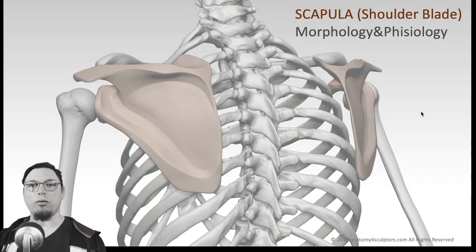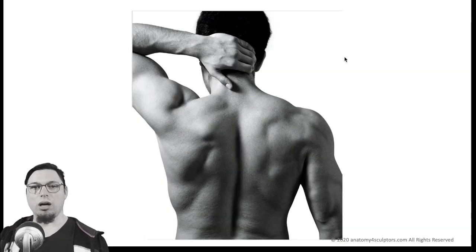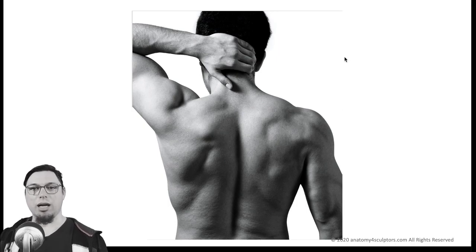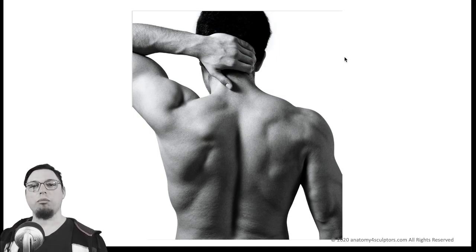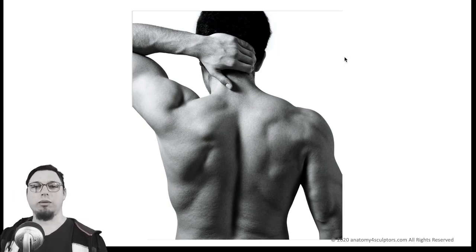Now it's time to talk about the morphology and physiology of the shoulder blade. When you look at the back of a model there are a lot of shapes, and most of those shapes are created by muscles — which is essentially correct. But all muscles have origins and insertions, so they are connected to bones. If you don't understand the movements of the bones — and the shoulder blade is a very mobile, free-floating bone — you cannot accurately project the muscles onto the surface.